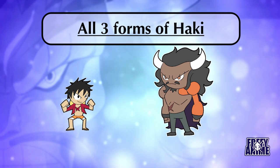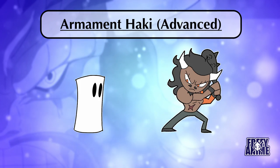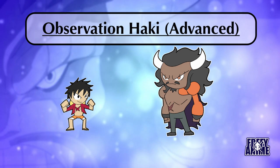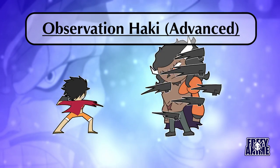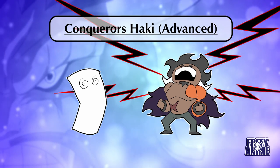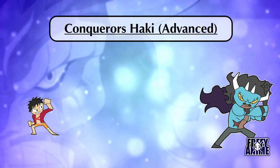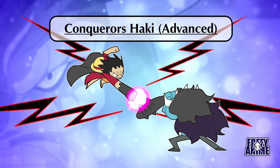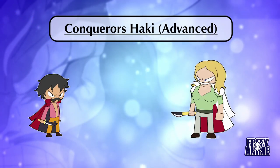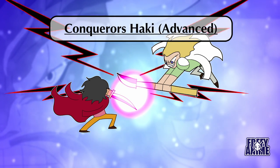He is also capable of using all three forms of haki. His armament haki increases his body's already incredible durability, while also allowing him to project his haki outside his body. His observation haki allows him to see and detect others and their strength, and he can also use its advanced form to see into the future. Lastly is his conqueror's haki — an ability only given to those with the disposition to stand above others — allowing his presence to knock people unconscious. He can also use its advanced form, allowing him to strike someone without making physical contact, an ability so strong it can pierce his dragon scales and split the sky. Only a handful of characters in the entire series have ever been shown to possess this ability, showing just how deadly Kaido is.